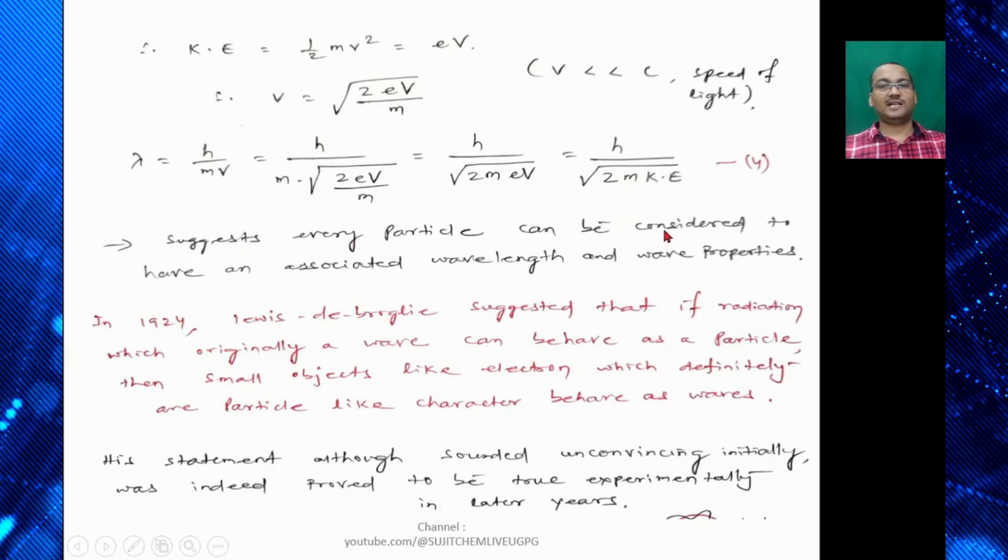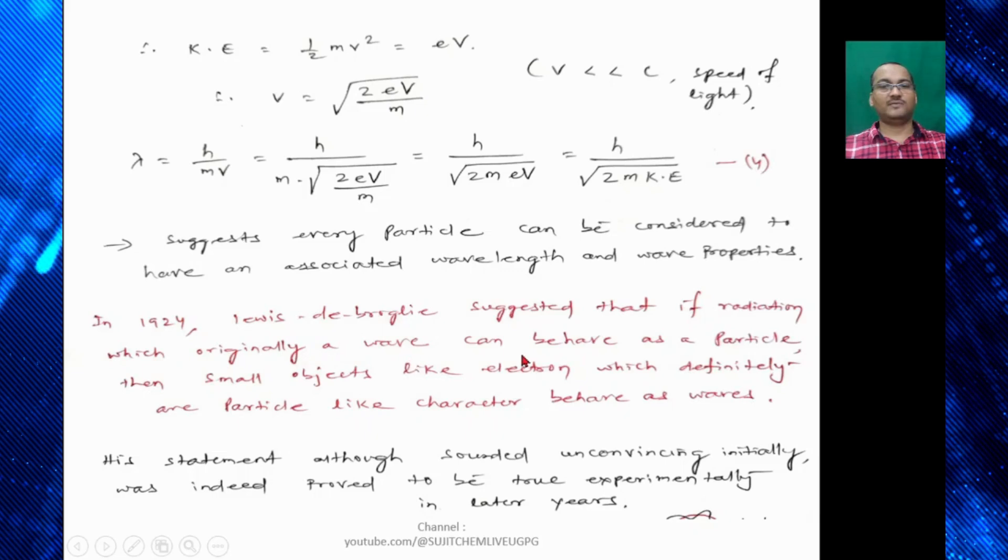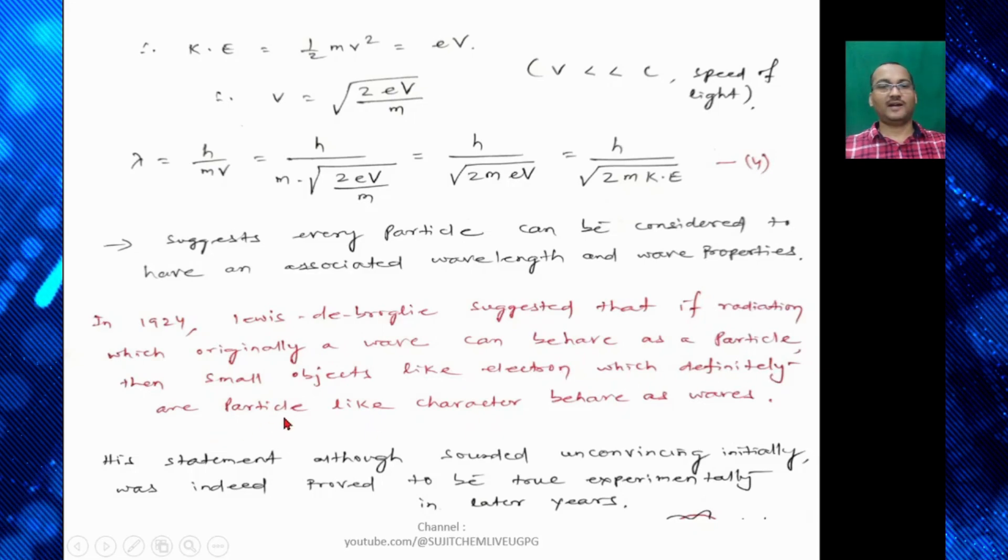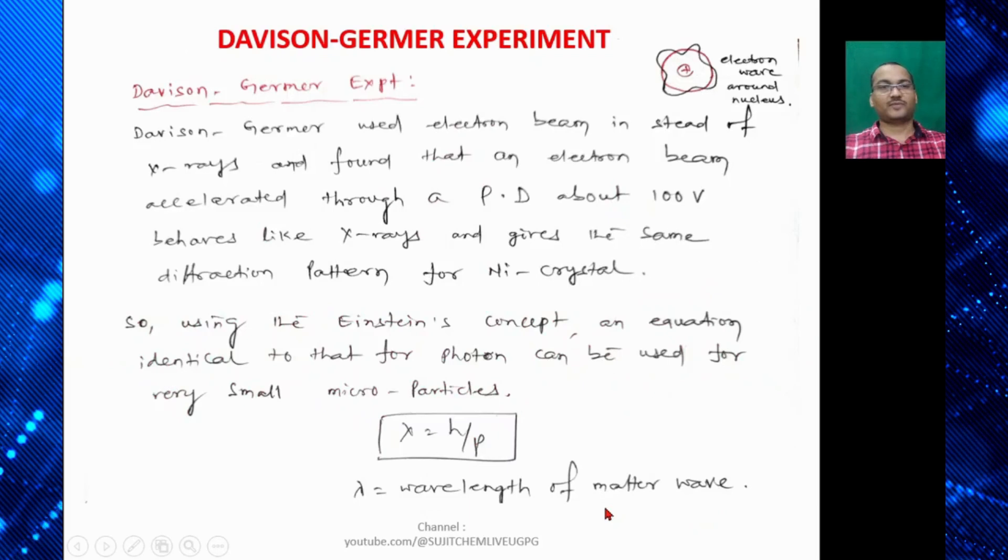Equation 4 suggests that every particle can be considered to have an associated wavelength and wave properties. So in 1924, de Broglie suggested that if radiation which originally a wave can behave as a particle, then small objects like electron which definitely are particle-like character behave as waves. So his statement although sounded unconvincing initially, was indeed proved to be true experimentally in latter years. So this was proved by Davison-Jarmer experiment.